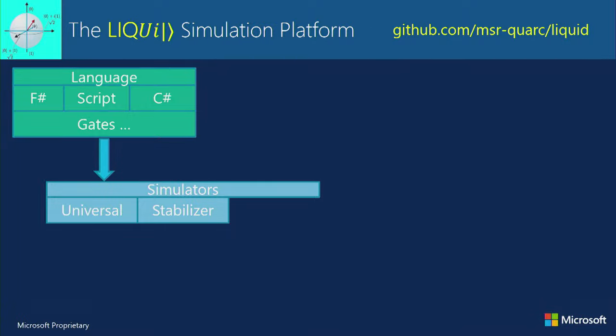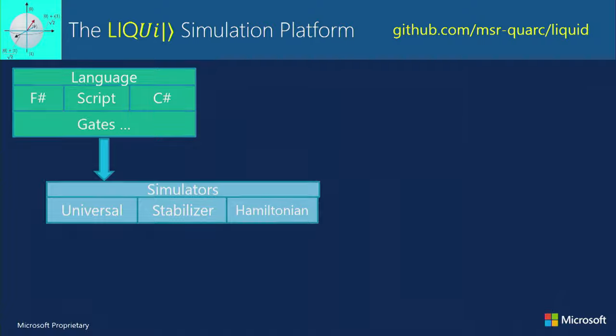There's also a stabilizer simulator that does a subset of quantum operations — a subset that's easy and efficient to do on a classical machine. You can do tens of thousands of qubits this way, but not general algorithms. The point is all error correction codes fit inside the stabilizer model, so you can do all error correction research with tens of thousands of qubits and figure out how to fix noise. There's also a Hamiltonian simulator — morally equivalent to the universal but ten times slower — which applies gates for periods of time, letting you simulate quantum systems, quantum chemistry, and quantum materials.